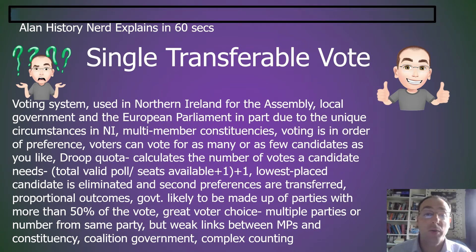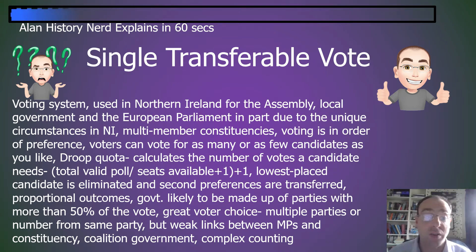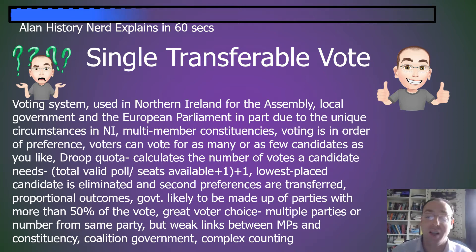Single transferable vote is a voting system used in Northern Ireland for the Assembly, local government, and European Parliament, in part due to the unique circumstances in Northern Ireland. It is made up of multi-member constituencies, voting is done in order of preference, and voters can vote for as many or as few candidates as they'd like.